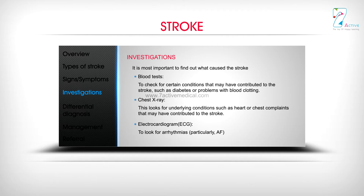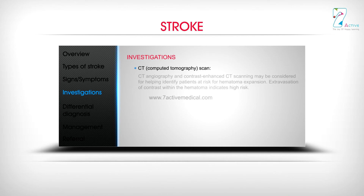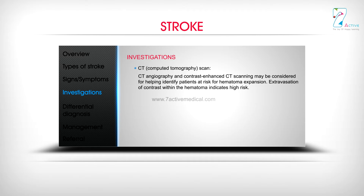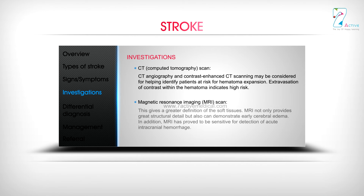An electrocardiogram (ECG) is used to look for arrhythmias, particularly atrial fibrillation (AF). CT (computed tomography) scanning, CT angiography, and contrast-enhanced CT may be considered to help identify patients at risk for hematoma expansion; extravasation of contrast within the hematoma indicates high risk.